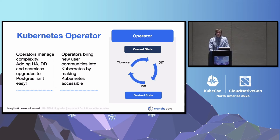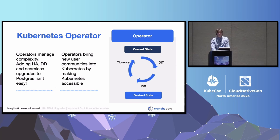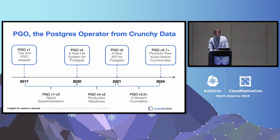So why do we need operators? Operators not only help to manage the complexity of deploying and managing an application, but they also reduce toil and invite new communities to take part in the Kubernetes ecosystem. In 2017, Crunchy Data recognized that operators could reduce the operational complexity of running Postgres. At first it was simply a matter of containerizing Postgres, but once containerized, we needed to orchestrate — especially in the areas of high availability, upgrades, and disaster recovery.